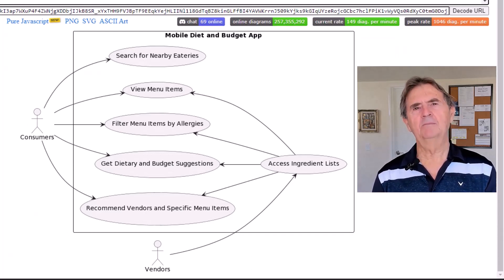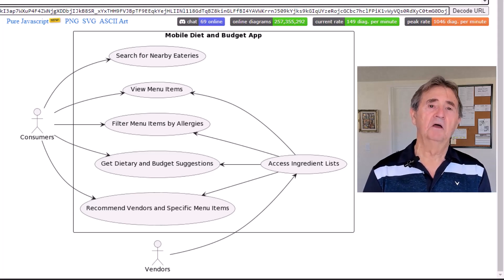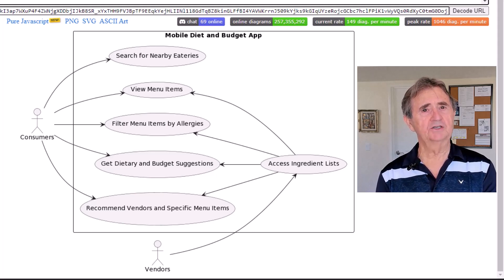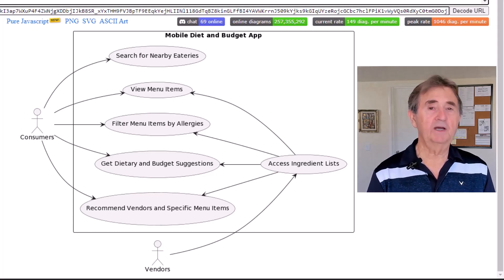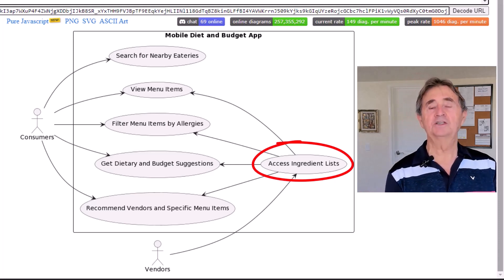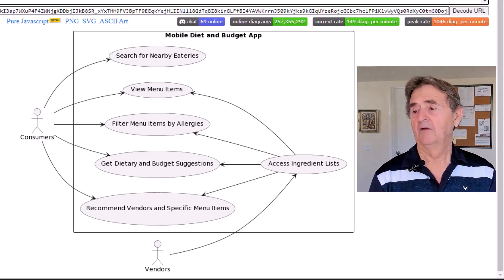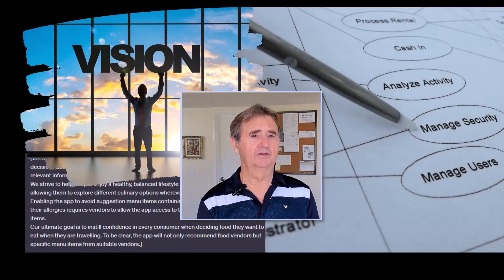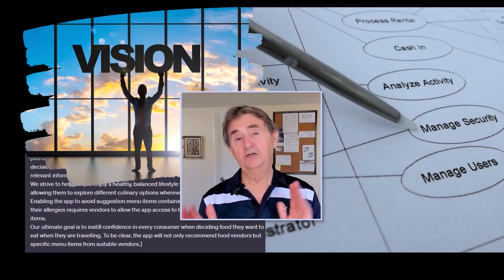Now, I might not be a fan of all the names assigned to the use cases, but I can change that. The visual representation of the actors and use cases is on point. Especially, I appreciate the Access Ingredient Lists use case — now it's in its supportive role, which makes a lot more sense. So, from a simple vision statement to a slick use case diagram, you can see how this AI-powered tool can give you insights at warp speed. Considering that this lecture takes less than five minutes, and half of that was just me talking, you can imagine the time-saving potential.